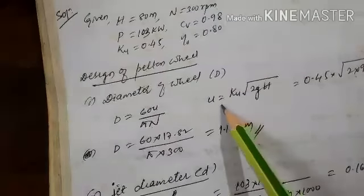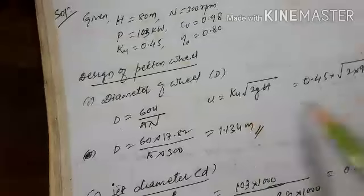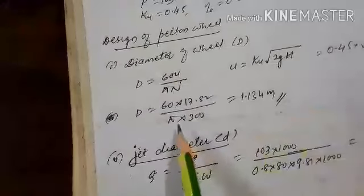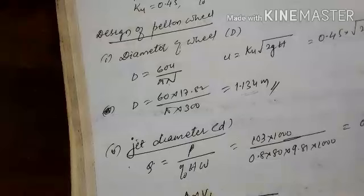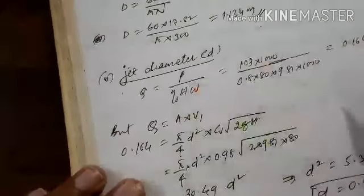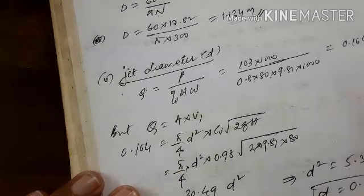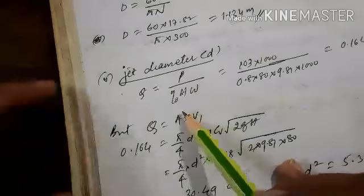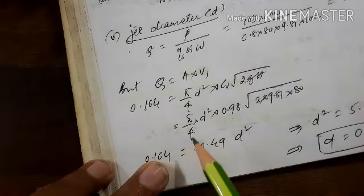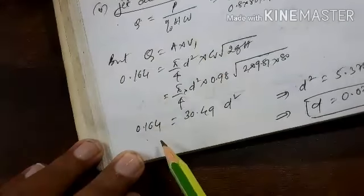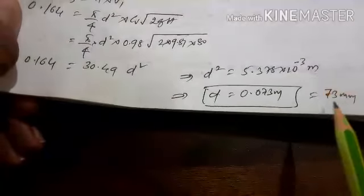To find jet diameter, first calculate total discharge from overall efficiency formula: η_o = shaft power / water power, giving Q = 0.164 cubic meter per second. Since Q = A × V1 = (π/4)d² × V1, and V1 = Cv × √(2gH) is known, we can solve for jet diameter d = 73 millimeter.